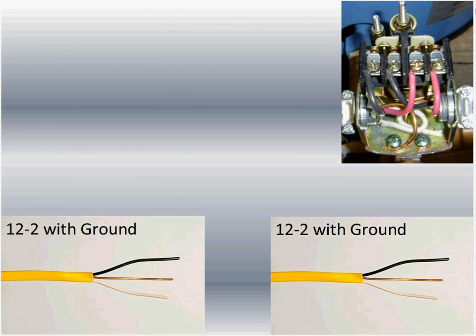I got a call one time from a guy who said his son — who just graduated from electrical school — had hooked up his pump at 230 volts. I purposely picked this picture because the wire colors are red and black, not white and black. Red and black indicate 230 volts — they are both hot wires. He said his son hooked the pump up to 230 volts, and the question was: what do we do with the neutral wires?